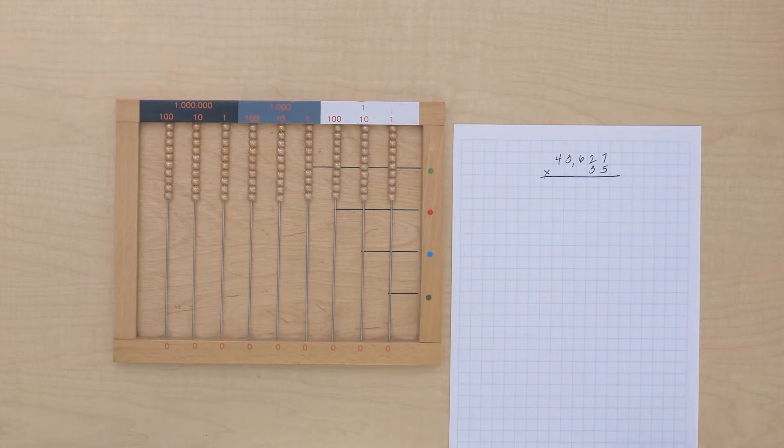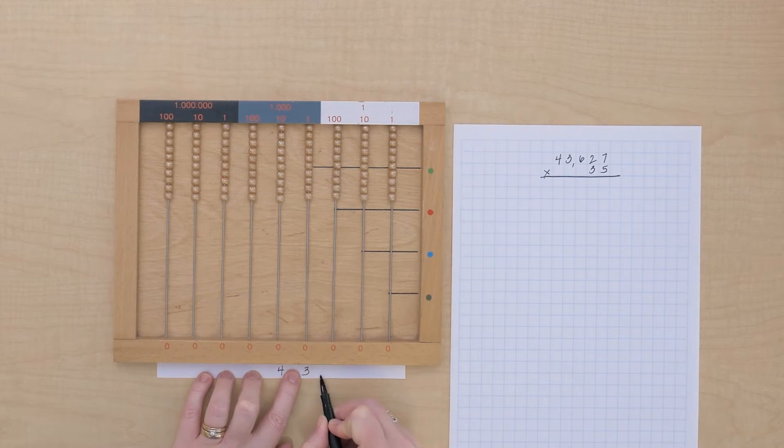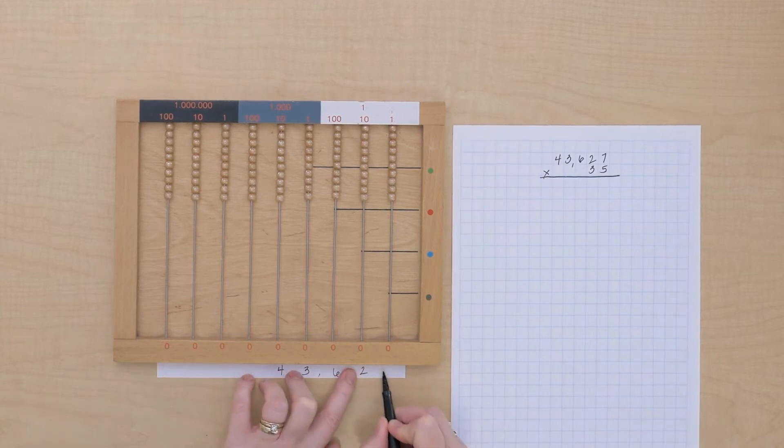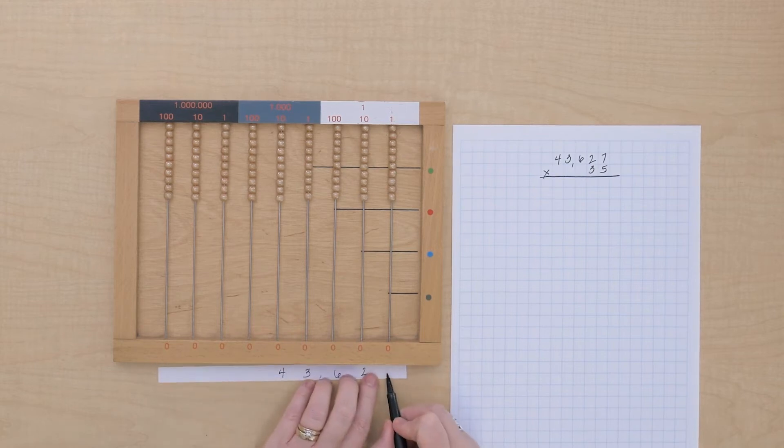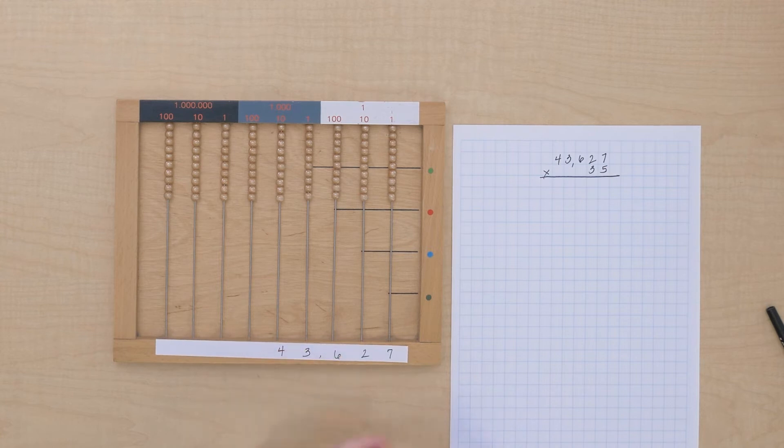Let's do 43,627 times 35. So, let's write down our multiplicand, 43,627, and our multiplier, 35.